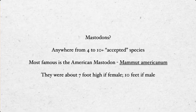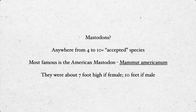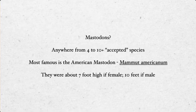Mastodons had anywhere from 4 to over 10 accepted species — and there's a lot of arguing over exactly how many. The most famous is the American mastodon. Females were about 7 feet high, males about 10 feet high. The same general pattern holds for mammoths — males were typically larger than females. Here is a mastodon skeleton, and notice you don't have that dome shape to the head.